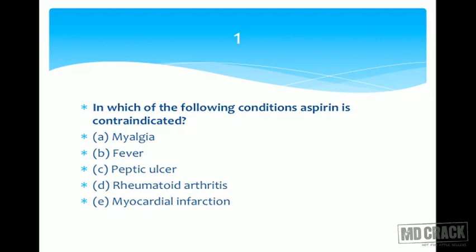Thinking through these options: myalgia and fever are fine uses. Peptic ulcer — aspirin is an NSAID, it inhibits prostaglandin synthesis leading to peptic ulcer, so this is one we're going to pick. Rheumatoid arthritis — is aspirin contraindicated there? Not really.